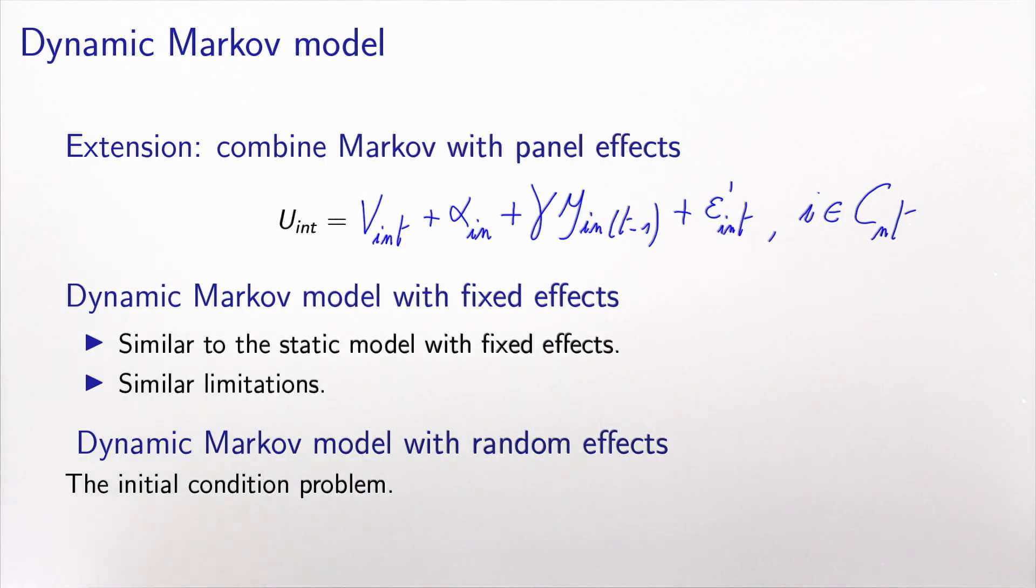We have two versions of this model. One, as we discussed in the lecture on serial correlation, one with fixed effect. So we have now a dynamic Markov model with fixed effects. All the limitations that we discussed in that context apply here as well. Indeed, the only difference is that we have one additional variable in the model. The rest is exactly the same.